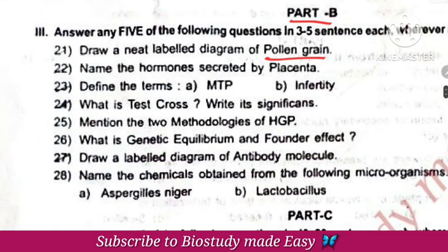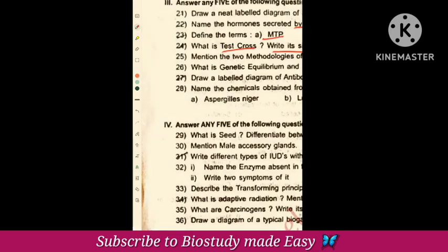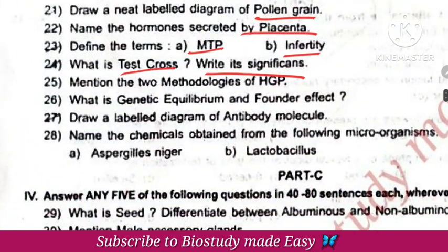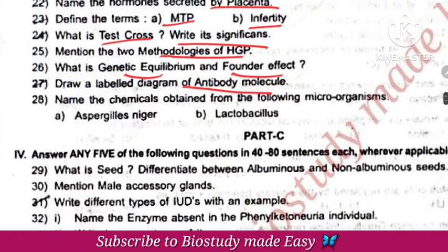Part B questions include: a neat labelled diagram of a pollen grain; hormones secreted by the placenta; definition of MTP; definition of infertility; test cross and its significance; two methodologies of HGP (Human Genome Project) — the methodology is also for 2 marks; genetic equilibrium and founder effect related to Hardy-Weinberg equilibrium; antibody molecular diagram for 2 marks; and chemicals obtained from Aspergillus, Rhizopus, and Lactobacillus from the microbes in human welfare chapter.